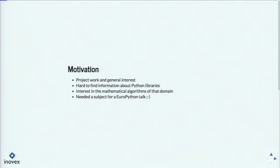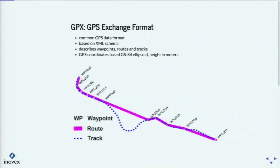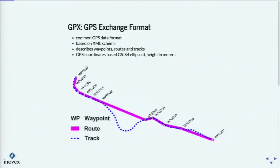And it's always good to have a talk when you're going to a cool conference like EuroPython. So first of all, when you're starting to deal with GPS data, it needs to be stored in a way. The typical format for GPS is the so-called GPX, the GPS Exchange Format, and it's based on XML.